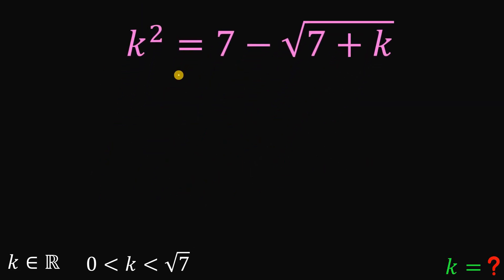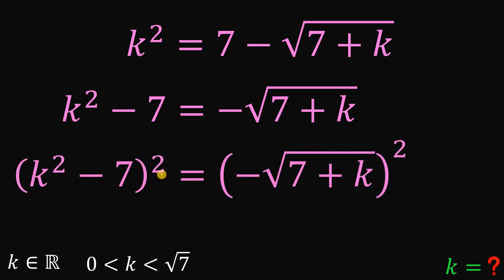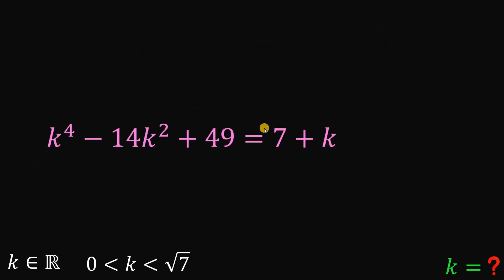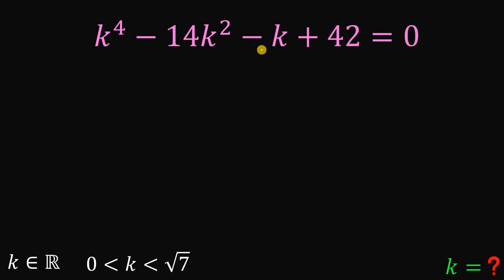What we're going to do is subtract 7 from both sides, and then to eliminate the square root, let's square both sides. Squaring gives us: k squared minus 7, squared, which is k to the fourth power minus 14k squared plus 49. And negative square root of 7 plus k, squared, gives us 7 plus k, because negative times negative is positive. Subtracting 7 and k from both sides and equating to zero: k to the fourth power minus 14k squared minus k plus 42 equals 0.